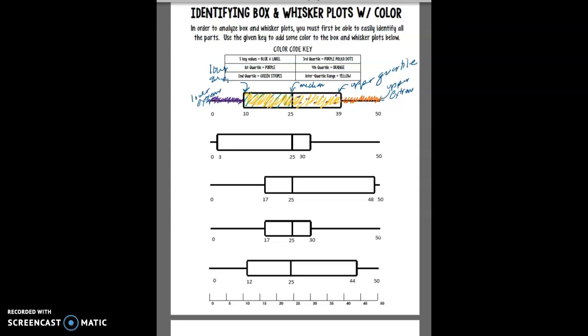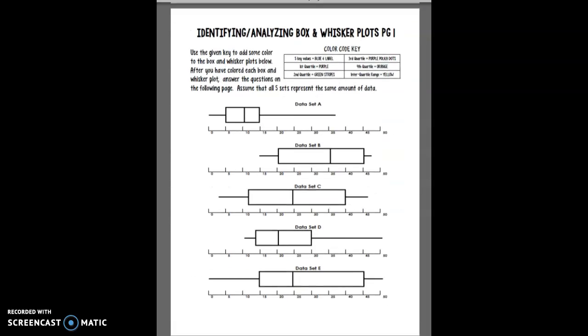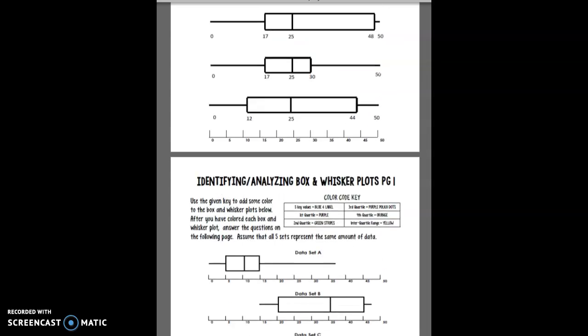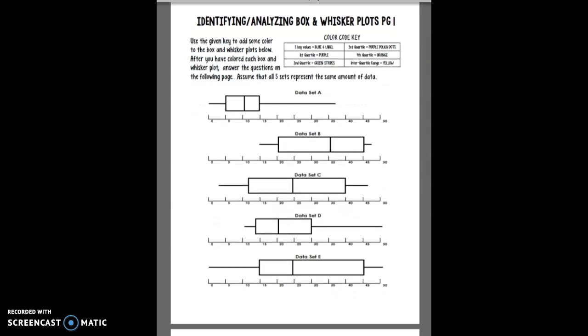Okay so you'll do the next four. And then you have some analyzing and identifying. It says use the key given to add some color to the box and whisker plots. After you've colored each box answer the questions. You're going to color these the very same way that you did the first one. And by this time it should be getting fairly easy.